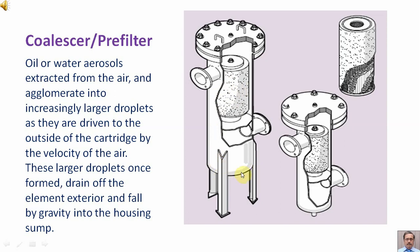These larger droplets, once formed, drain off the element exterior and fall by gravity into the sump.